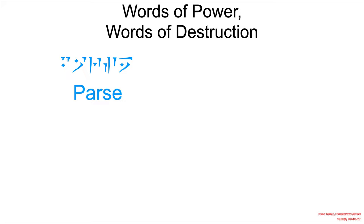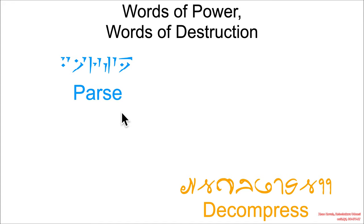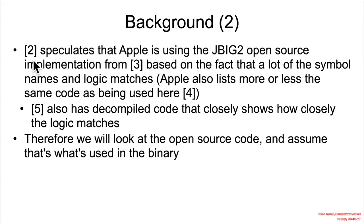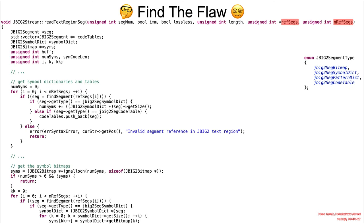So we can already see from that brief description that we're going to have some parsing of things like PDFs and some decompressing of things like JBIG2 streams. The related citations speculate that Apple was using the JBIG2 open source implementation, and if you look at Apple's open source releases, you can see the code is more or less the same. Further decompilation showed how closely the binary code logic matches the open source code. So I'm going to show you the open source code and assume that was the code found in the binary at exploitation time — time to head to the web page, read the code, and find the flaw.